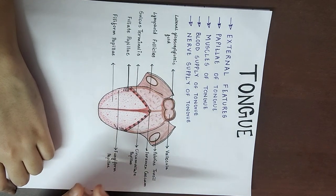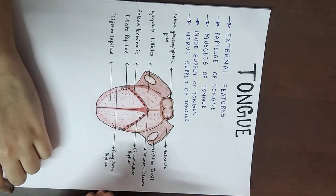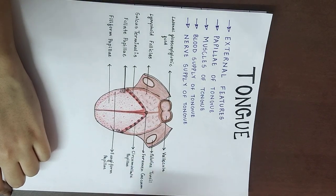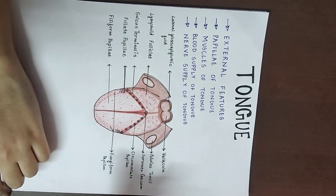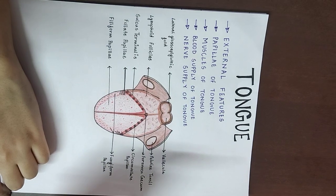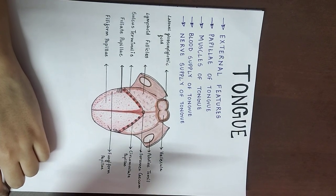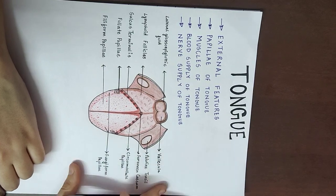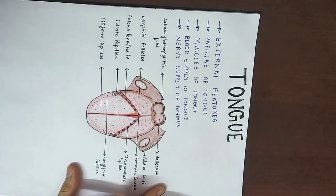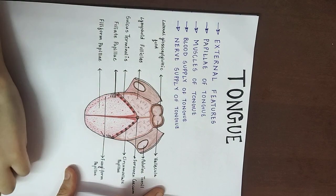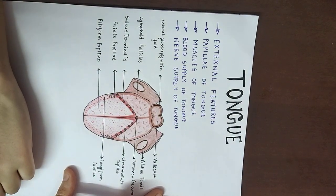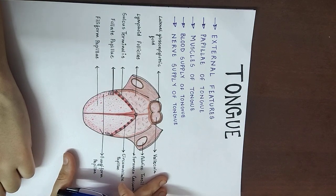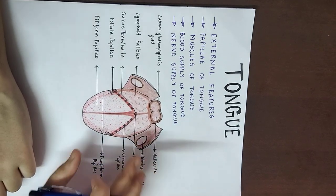The root is the part where the tongue is connected to the body so that during deglutition, we do not swallow the tongue. On the upper side, the tongue is connected to the styloid process with the help of styloglossus, and to the soft palate with the help of palatoglossus. On the bottom, the tongue is connected to the mandible with the help of genioglossus, and to the hyoid bone with the help of hyoglossus.